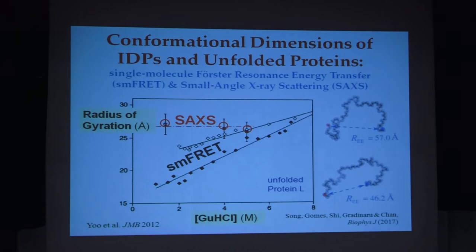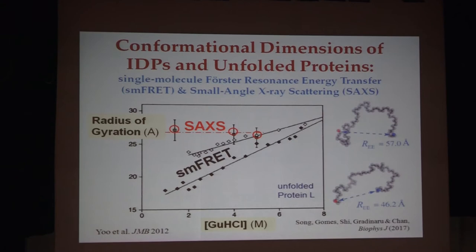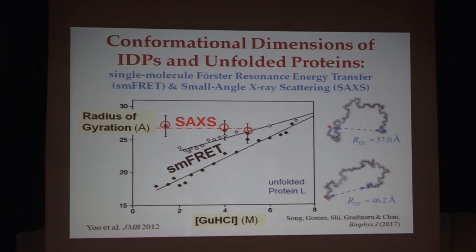Let me begin by talking about how people measure the conformational dimension of the unfolded state of a protein or IDP. There are many methods, but two of them are quite widely used: one is single-molecule FRET and the other is small-angle X-ray scattering, SAXS. But there's been a long-standing controversy in the field because they don't come out to be consistent.